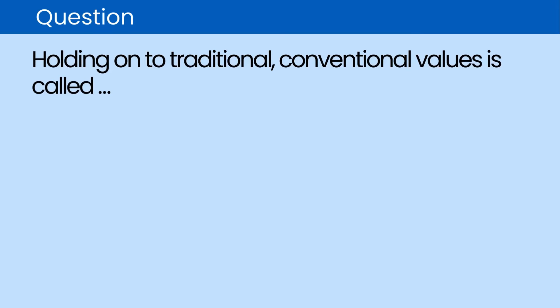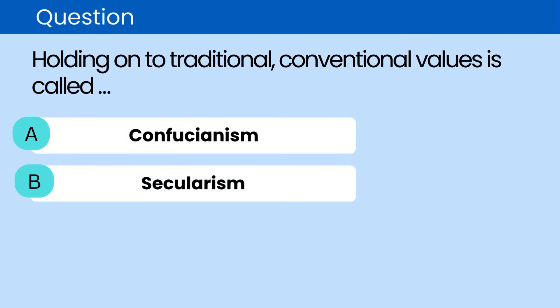Question: Holding on to traditional, conventional values is called. A. Confucianism. B. Secularism. C. Conservatism. D. Heresy.